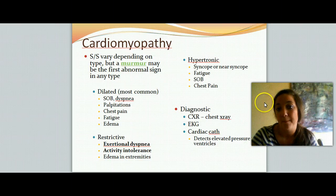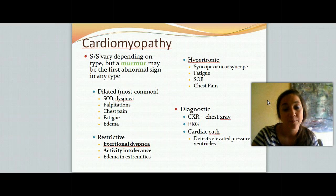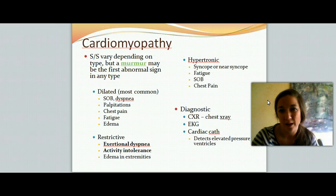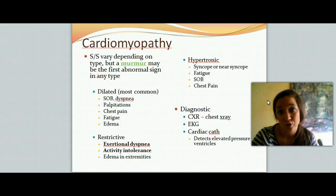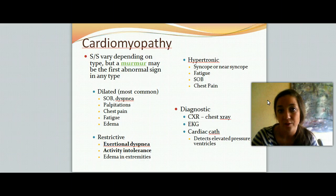With hypertrophic cardiomyopathy, they can have syncope — which means dizziness — or near-syncope, fatigue, shortness of breath, and chest pain. To diagnose it, we get a chest x-ray to visualize the structure of the heart. An EKG will show us how well the heart is pumping and the rhythm. And then a cardiac cath — which we'll look at later — will detect elevated pressure within the ventricle.